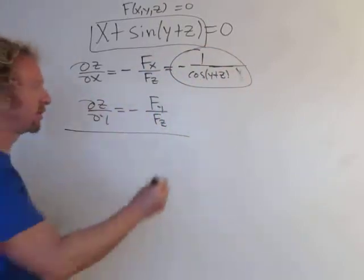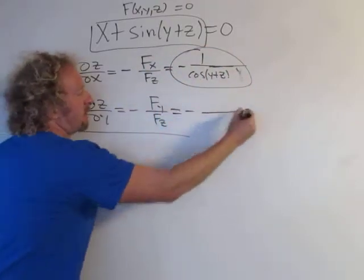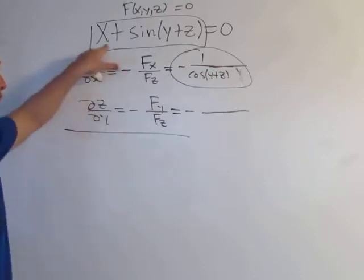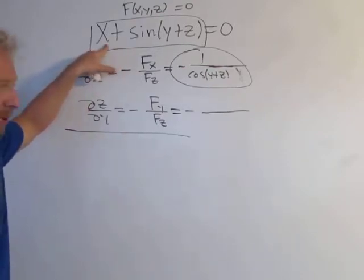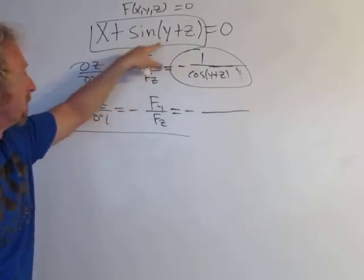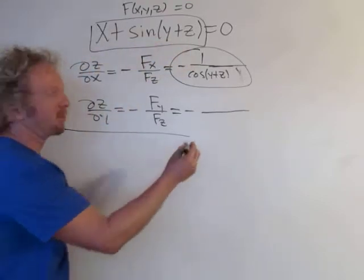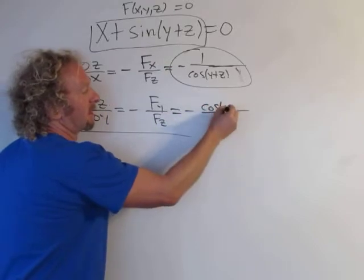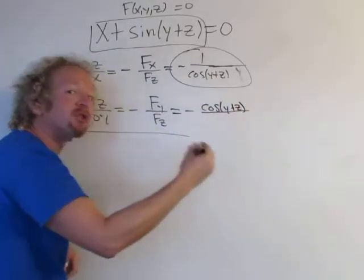For the next one, let's go ahead and do it. The negative hangs out. The partial with respect to y—well, the derivative of x is zero with respect to y. Here we have sin(y + z), so that's going to be cos(y + z) times the derivative of the inside.